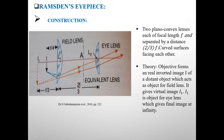So we will see the theory. The objective forms a real inverted image of a distant object. This image acts as an object for the field lens, and it gives a virtual image at I1. This virtual image I1 acts as an object for the eye lens, and it gives the final image at infinity.